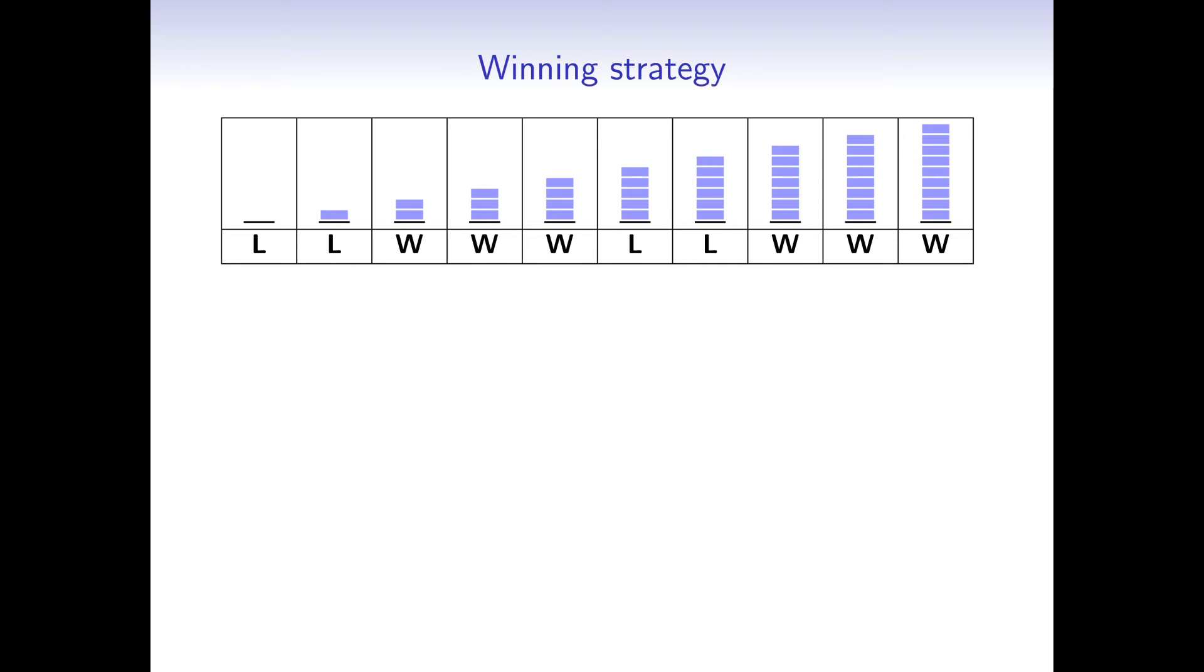Let's try this with Mario and Luigi's game. I've already determined the winning and losing states. The piles with 0, 1, 5 and 6 blocks are the losing states. The other ones are winning states. Now Mario starts with a pile of 9 blocks. This is a winning state. So Mario will win if he plays optimally.